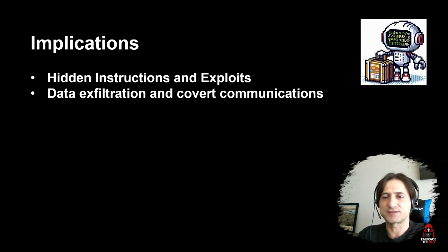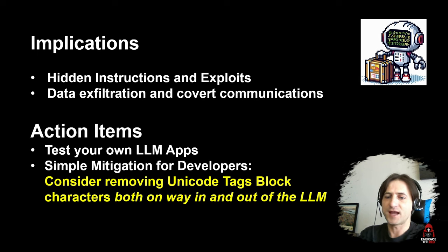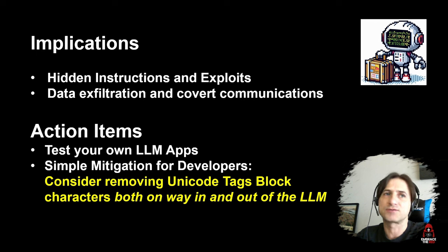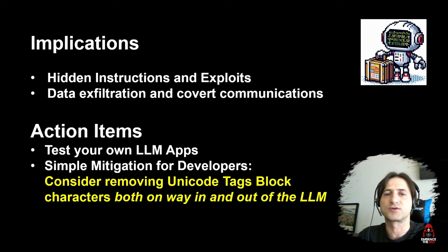The implications are twofold for ASCII smuggling: we can hide instructions and exploits in texts that LLMs interpret, and that can lead to data exfiltration — entirely covert communication back and forth. The important action items: if you build an LLM application, test your own application for this vulnerability type. There are simple mitigations — do not interpret those Unicode code points, strip and remove them on the way in but also on the way out. Other things like do not render hyperlinks or images pointing to untrusted domains also apply, as we've talked about in the past.